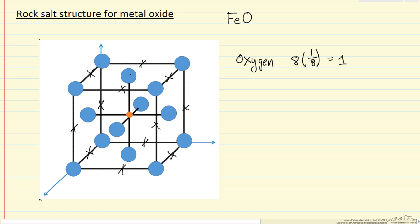Six face atoms, this one and five others—half are in this structure, half are in the next unit cell—so we have six times one-half, so we have a total of four oxygen atoms in this unit cell.